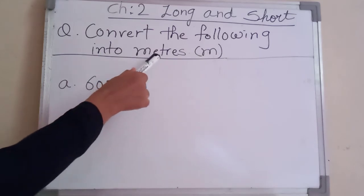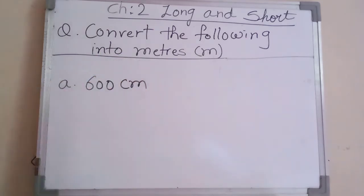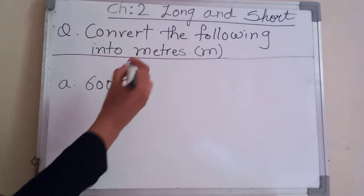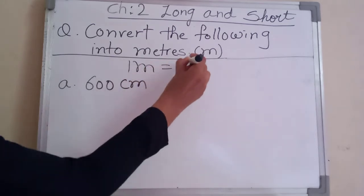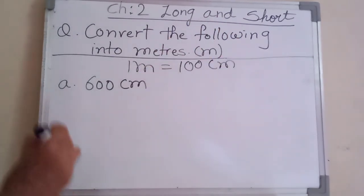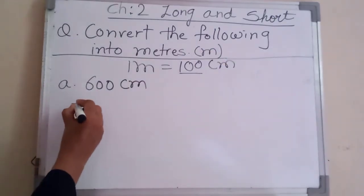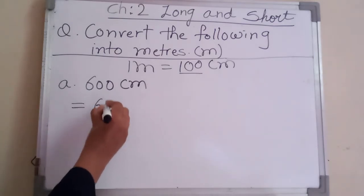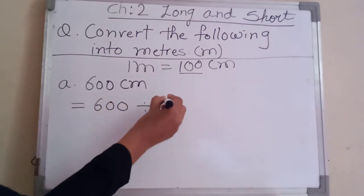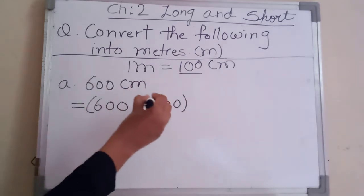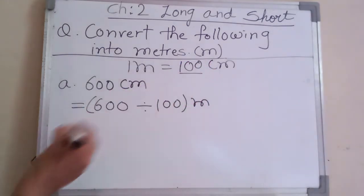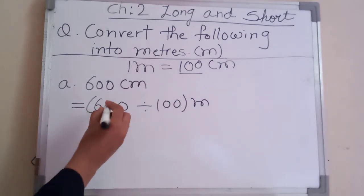In centimeter and meter, centimeter is the smaller unit and meter is the bigger unit. So here we are doing conversion of smaller unit to bigger unit, which means we do division — division by hundred, because one meter equals one hundred centimeter. So we write: six hundred divided by hundred, and the unit changes to meter.